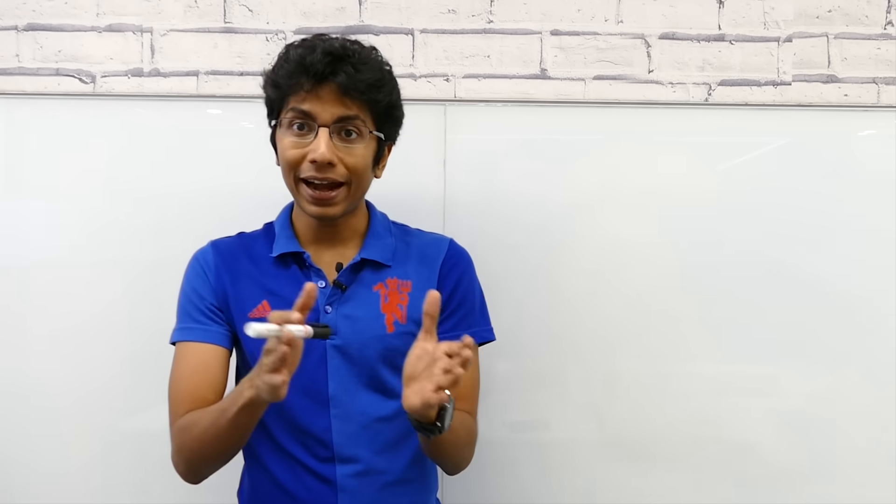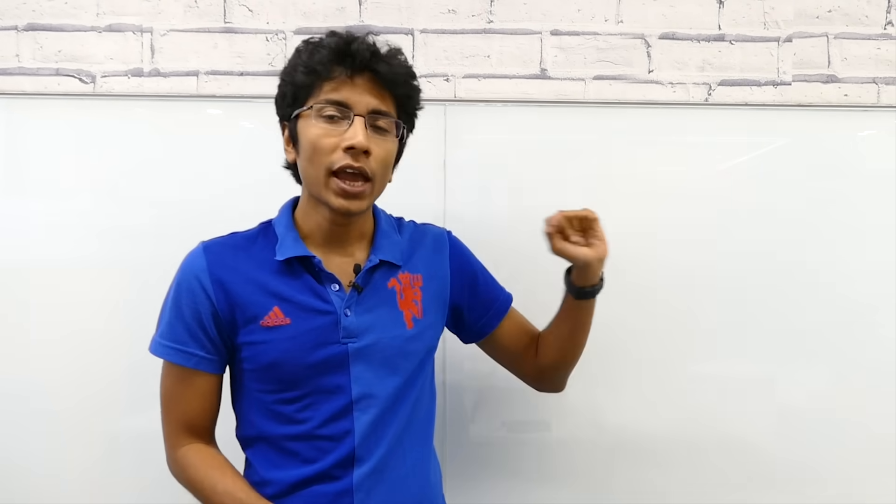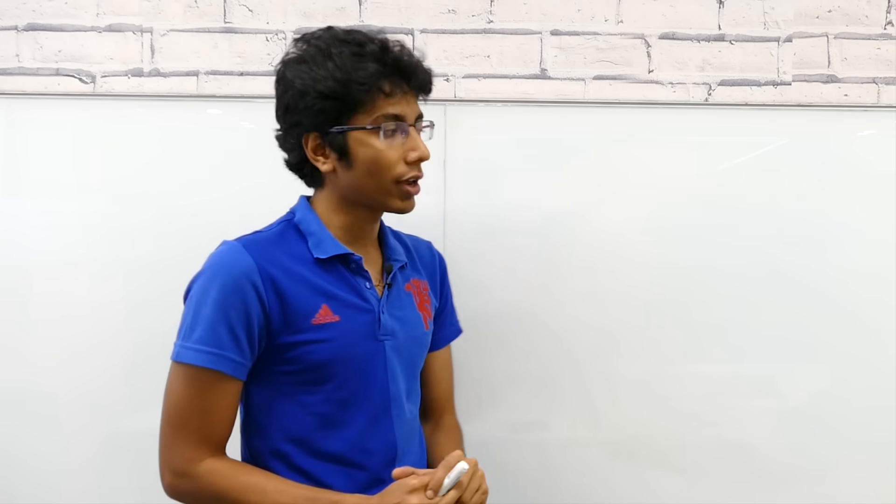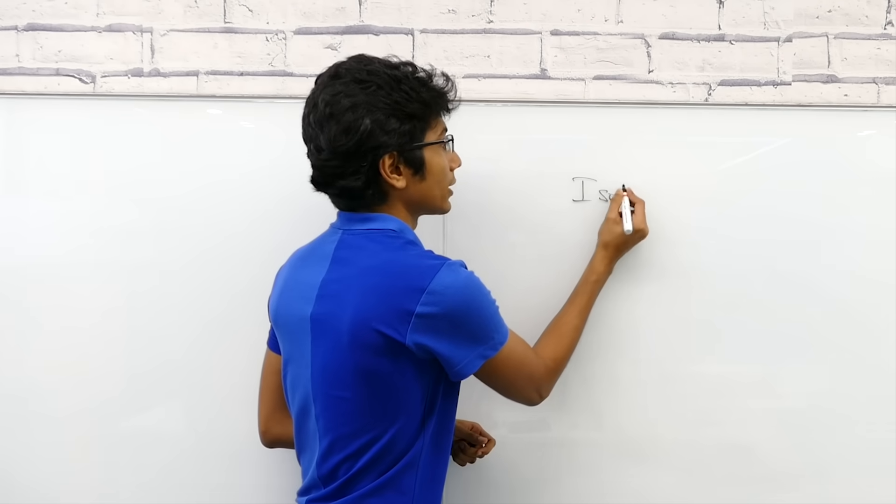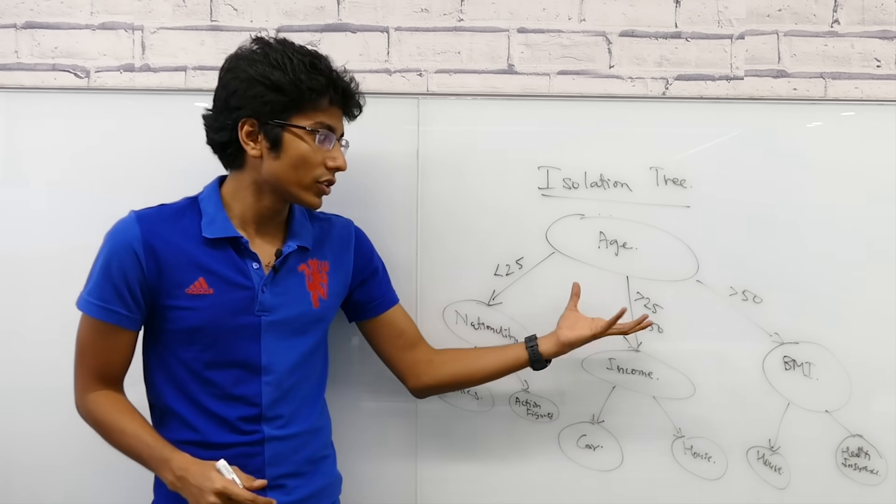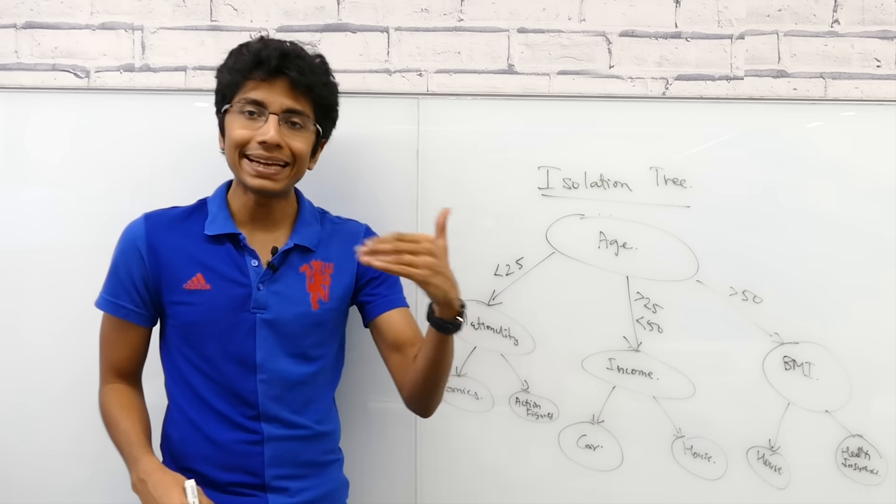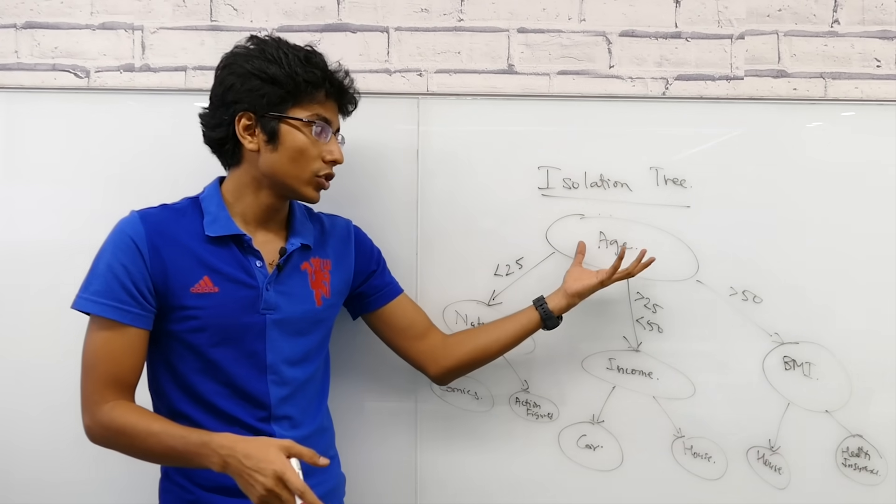There's a lot of algorithms which find anomalies in a series of data, especially time series data. And I have listed a lot of them in the description below. The one that we'll be talking about is a very promising one which is called an isolation tree. An isolation tree is basically a decision tree. A decision tree you can assume it to be making decisions based on the inputs that you have. So for example, if you have your age which is greater than 50 and you have good health, then you buy a house.